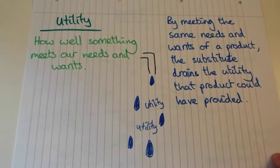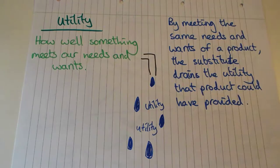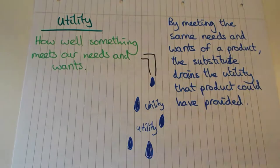Moving on to the idea of utility, which is simply how well something meets our needs and wants. So that could be food meeting our needs to eat and have sufficient nutrition. Or it could be another type of, say chocolate, which is also food but that meets our wants to have something like the pleasure of having something sweet and sugary.